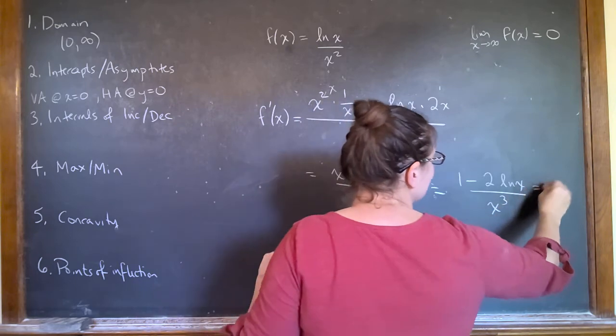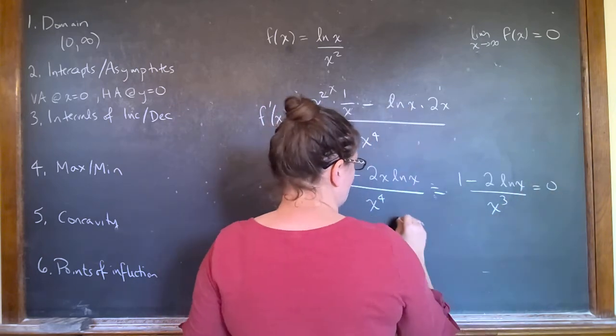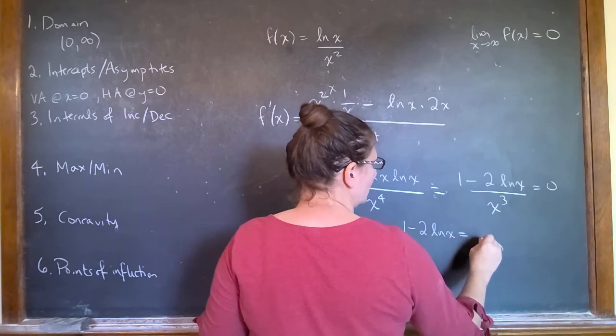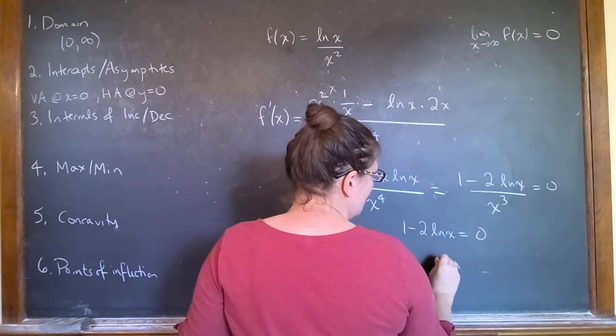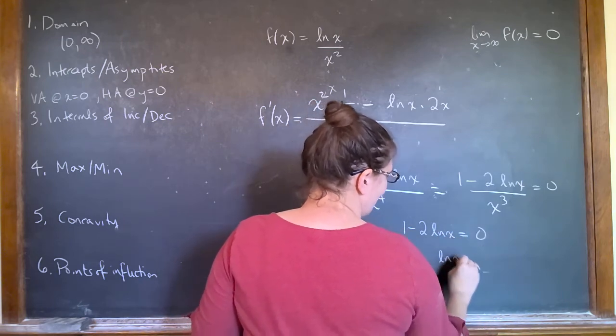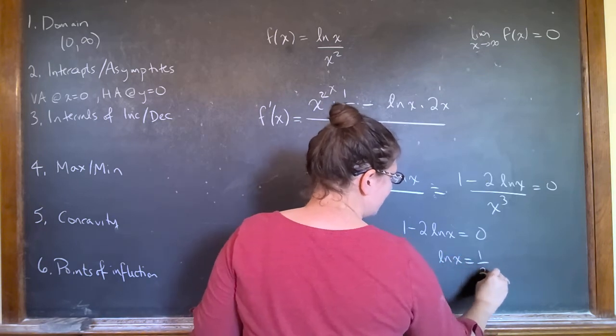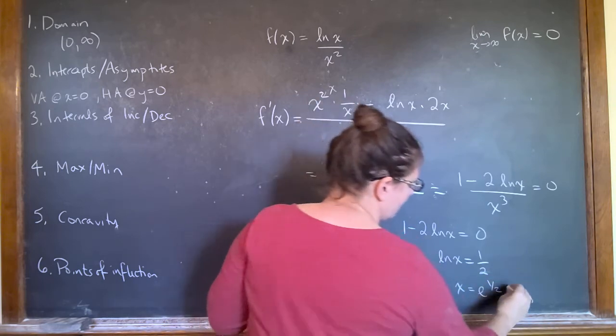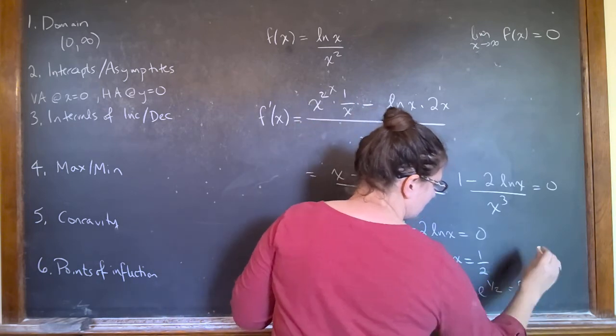Here, I want to set this equal to zero. So I have one minus two natural log of x is equal to zero. So the natural log of x is equal to one half. So x is equal to e to the one half, square root of e.